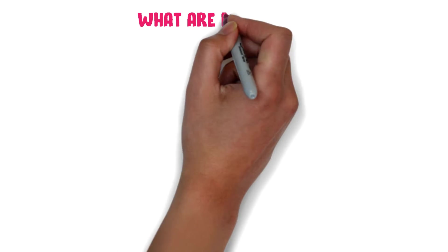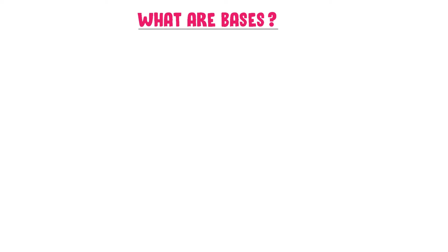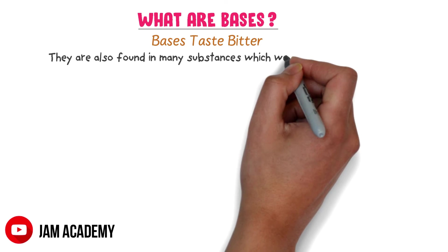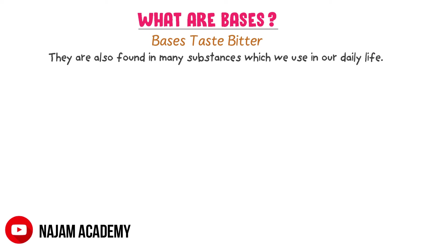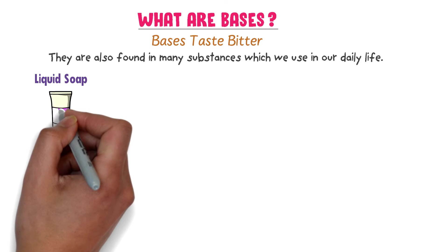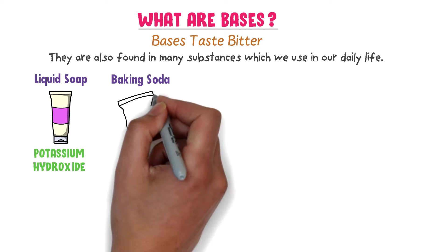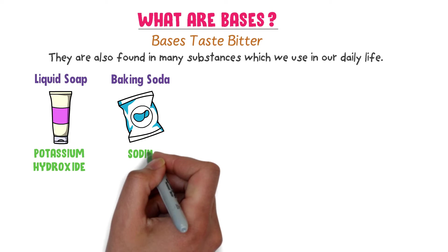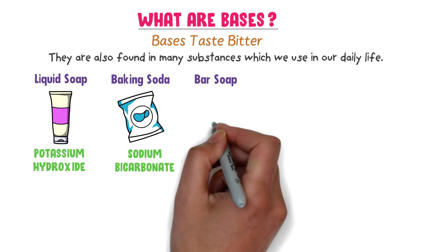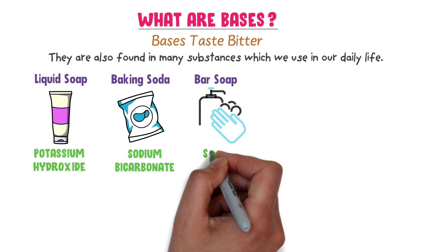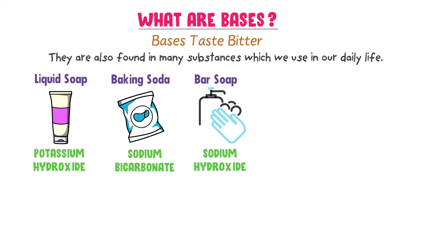Now, what are bases? Well, bases taste bitter and they are also found in many substances which we use in our daily life. For example, liquid soap — it contains potassium hydroxide. Secondly, baking soda — it contains sodium bicarbonate. Thirdly, bar soap — it contains sodium hydroxide. Fourthly, detergents — they contain ammonia.